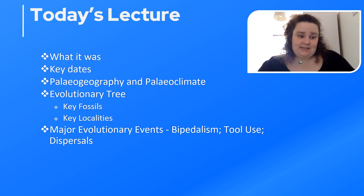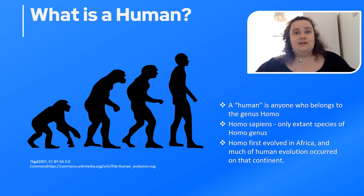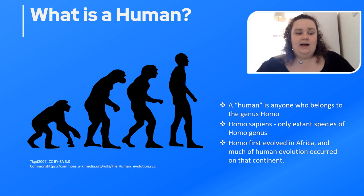What is a human? A human is anyone who belongs in the genus Homo. Homo sapiens are the only extant species of the Homo genus — what we are today, also called anatomically modern humans. Homo first evolved in Africa, and the evolutionary history of the genus Homo spans roughly 5 to 7 million years ago, with Homo sapiens emerging at around 300,000 years ago.